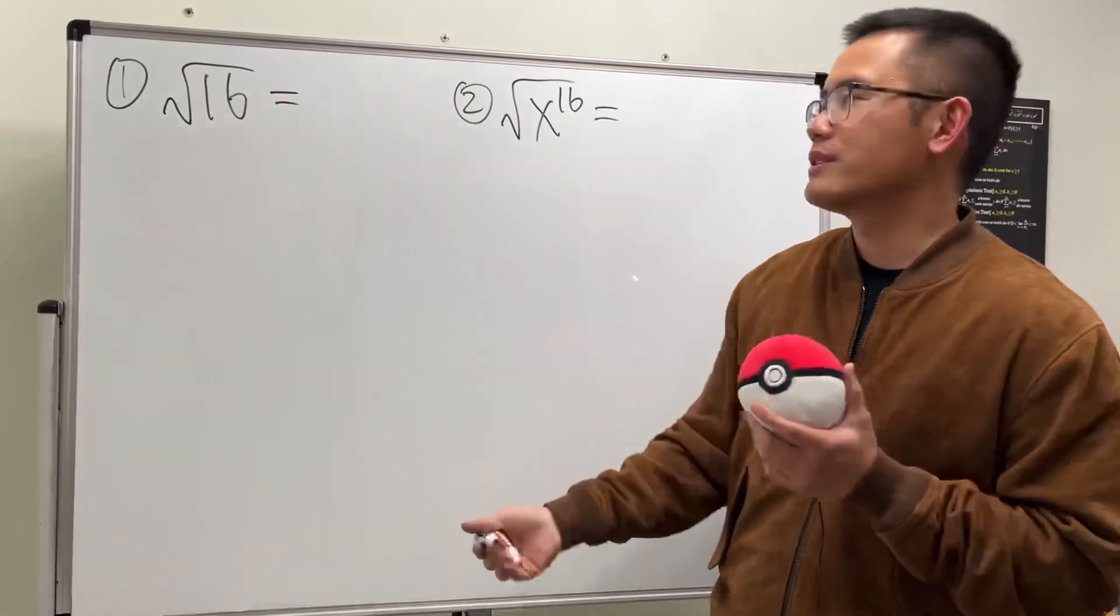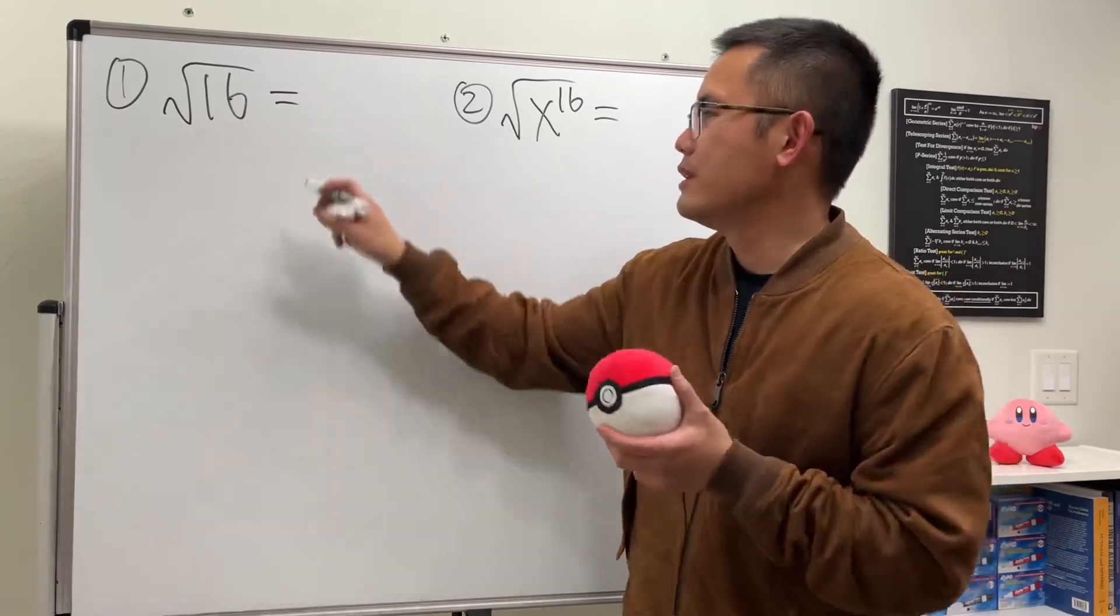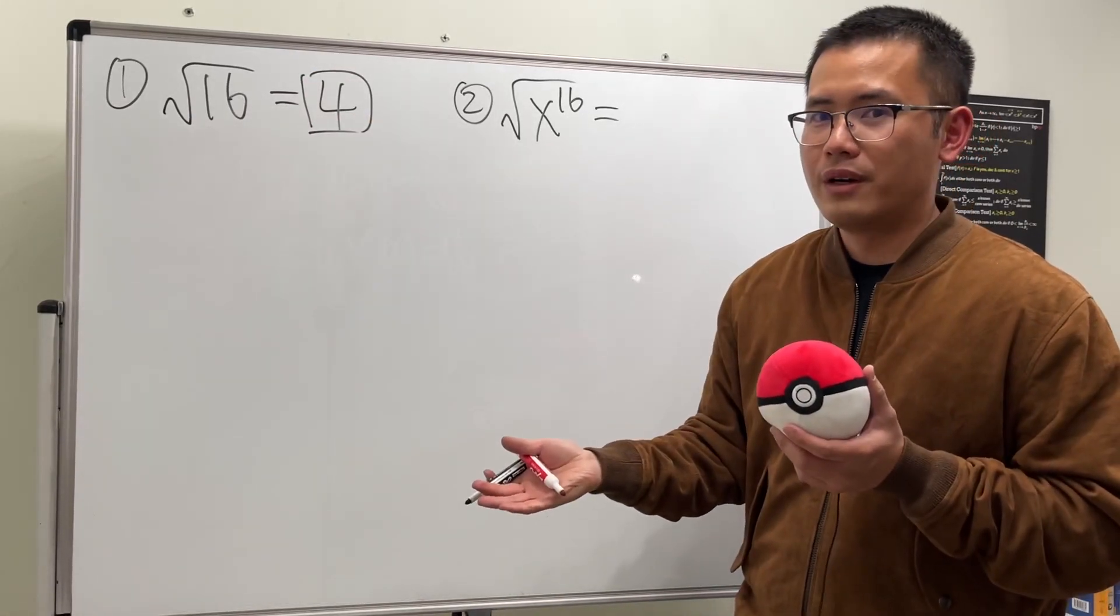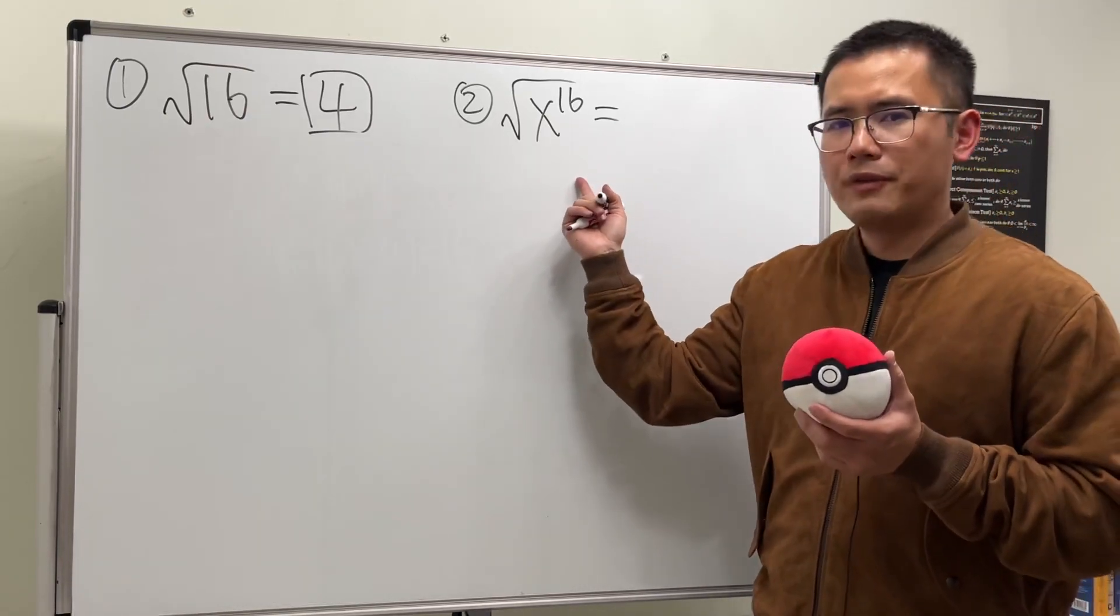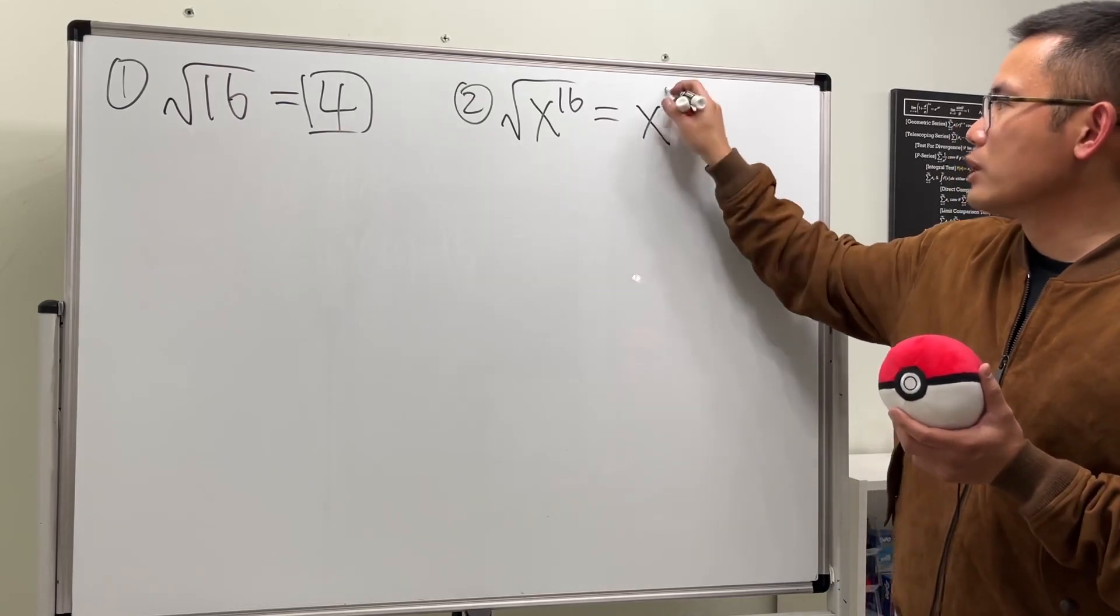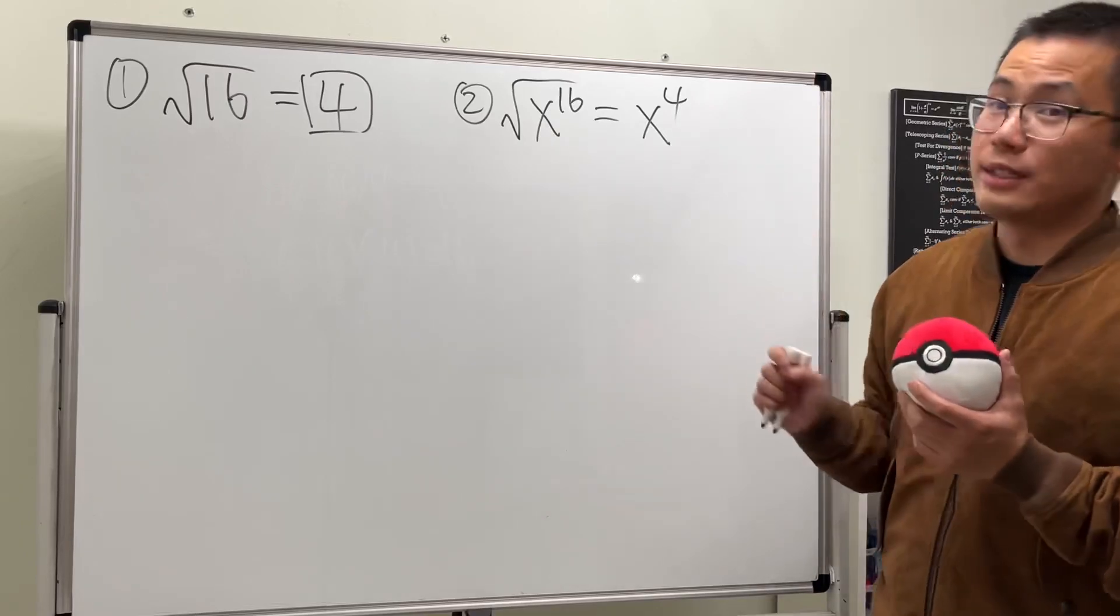This, yes. Of course square root of 16 is equal to what? Four. Good, that's it. This is the easy one, and the answer is just equal to four. How about for the second one? We have the 16 here, so is the answer just x to the fourth power right here? Nope, this right here is the tricky one.